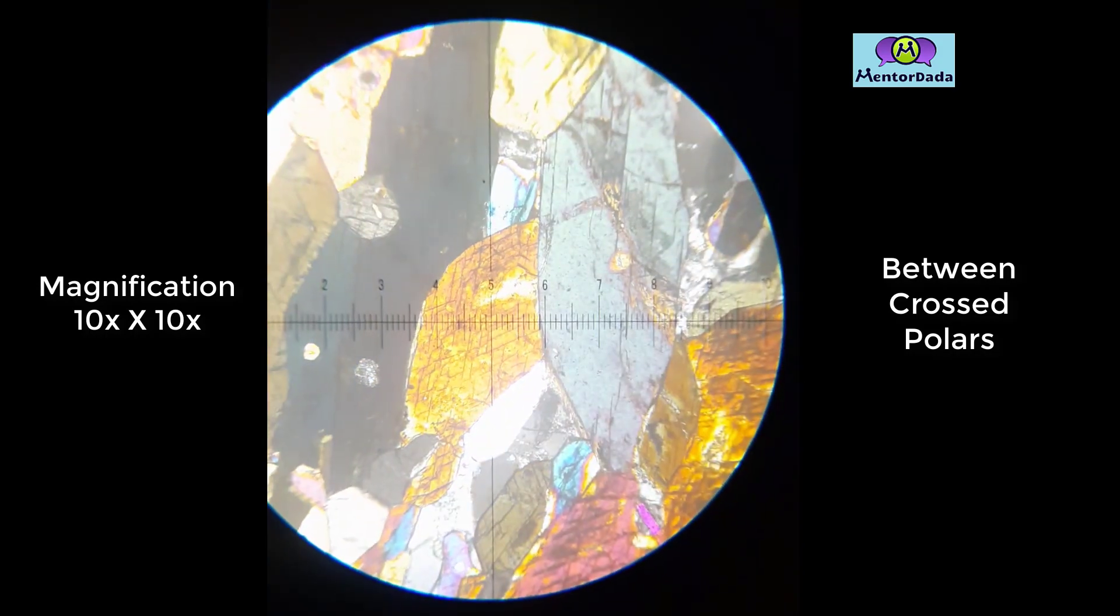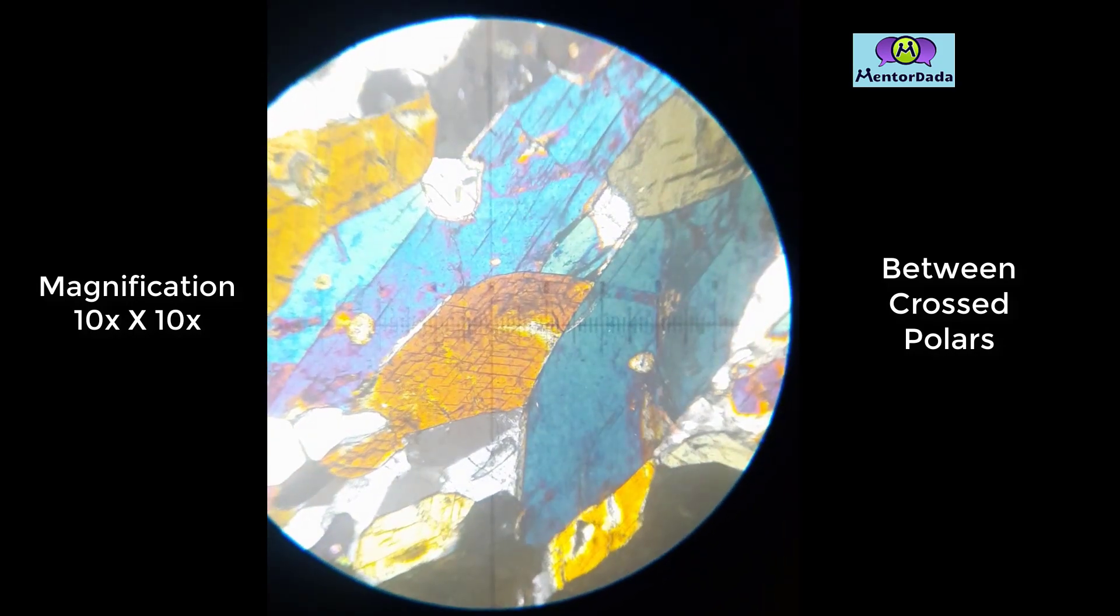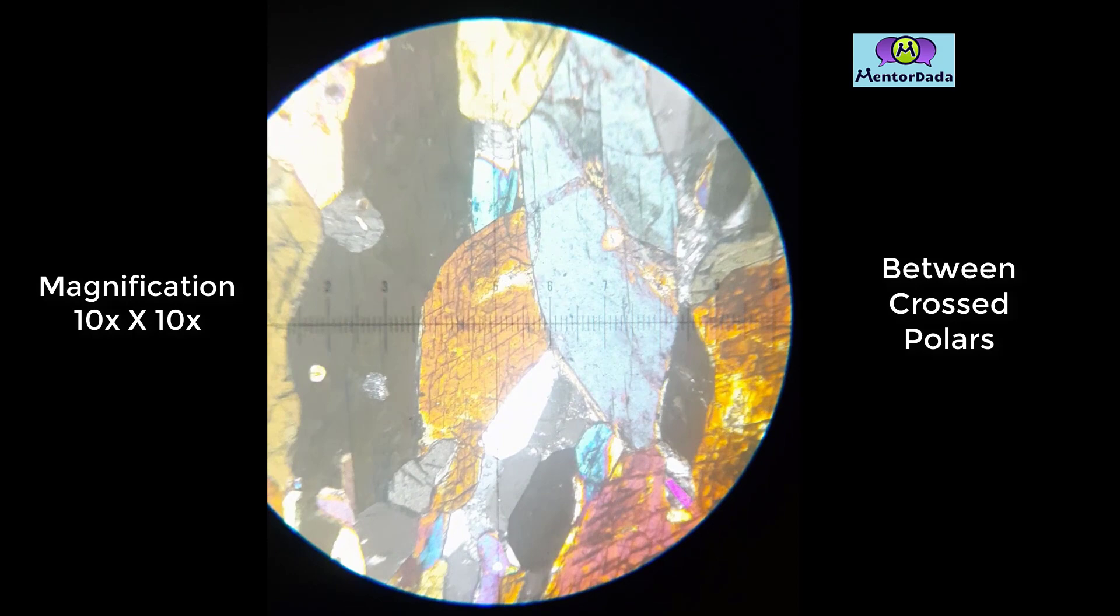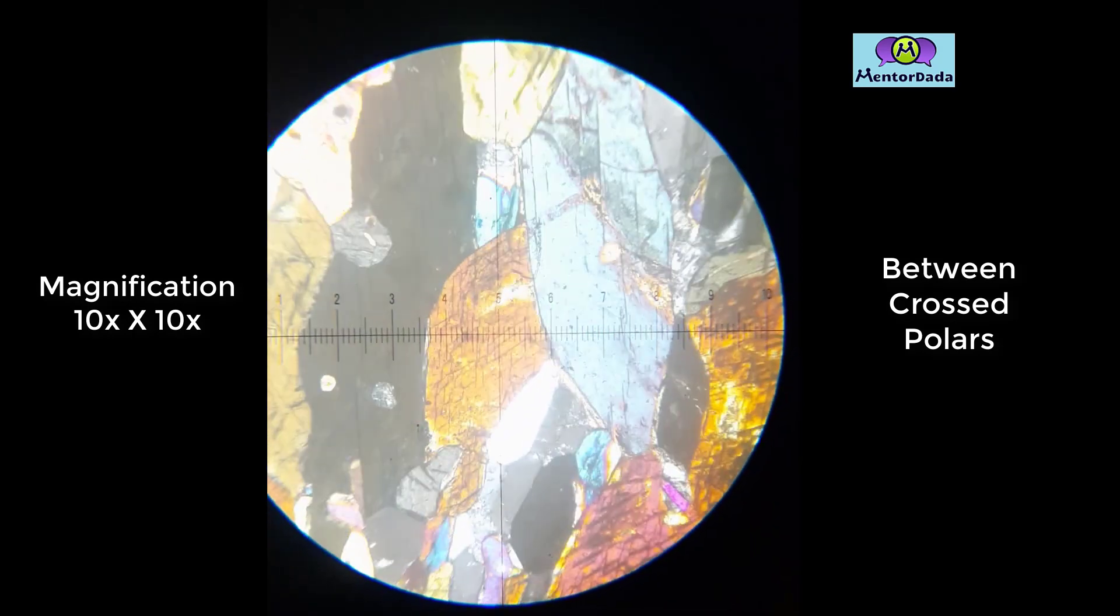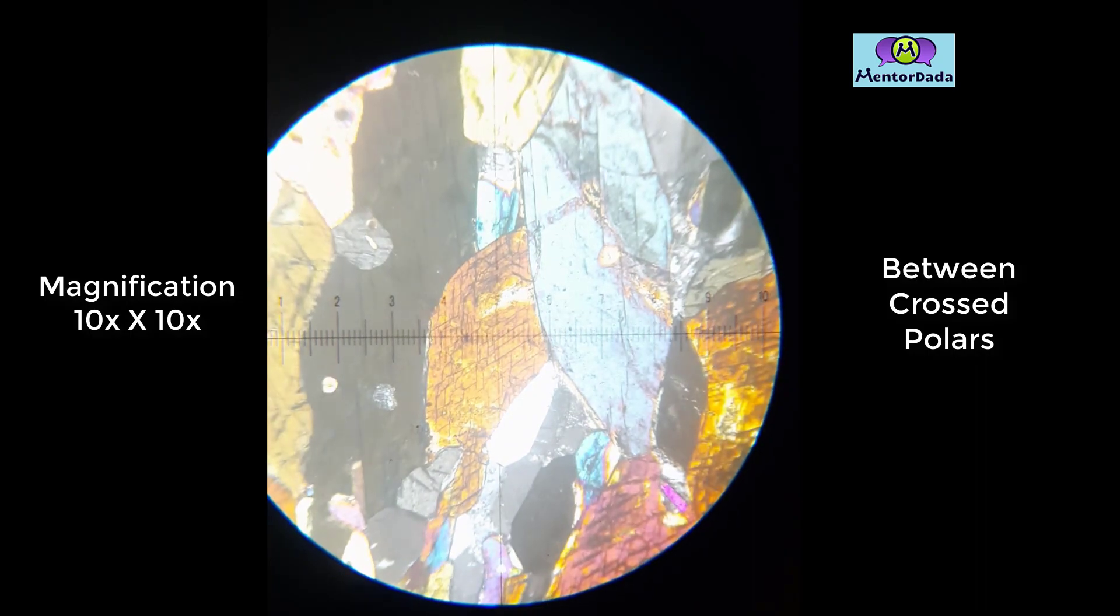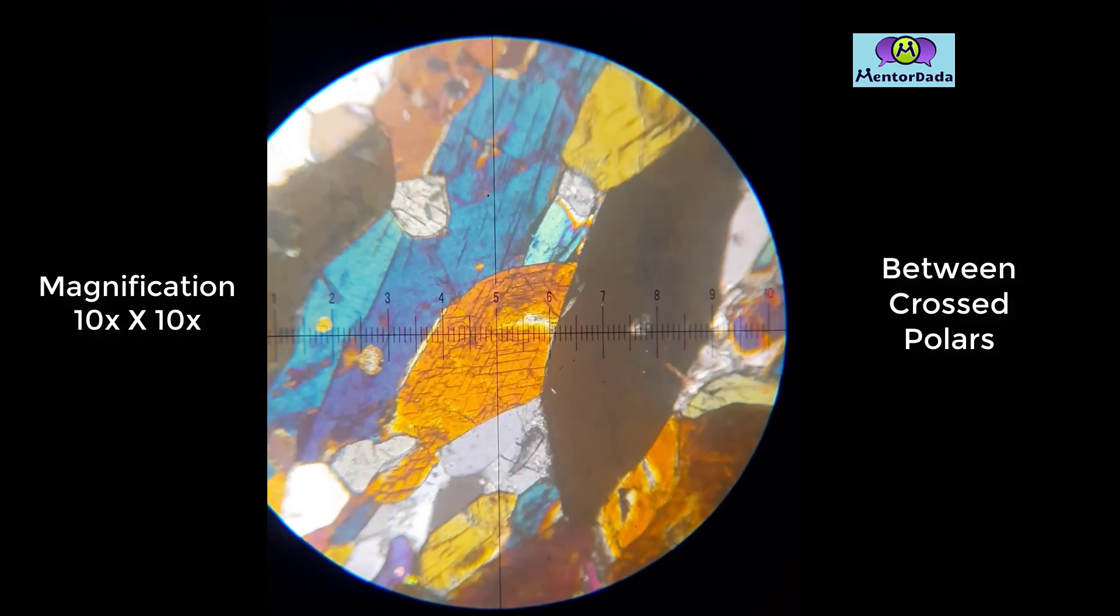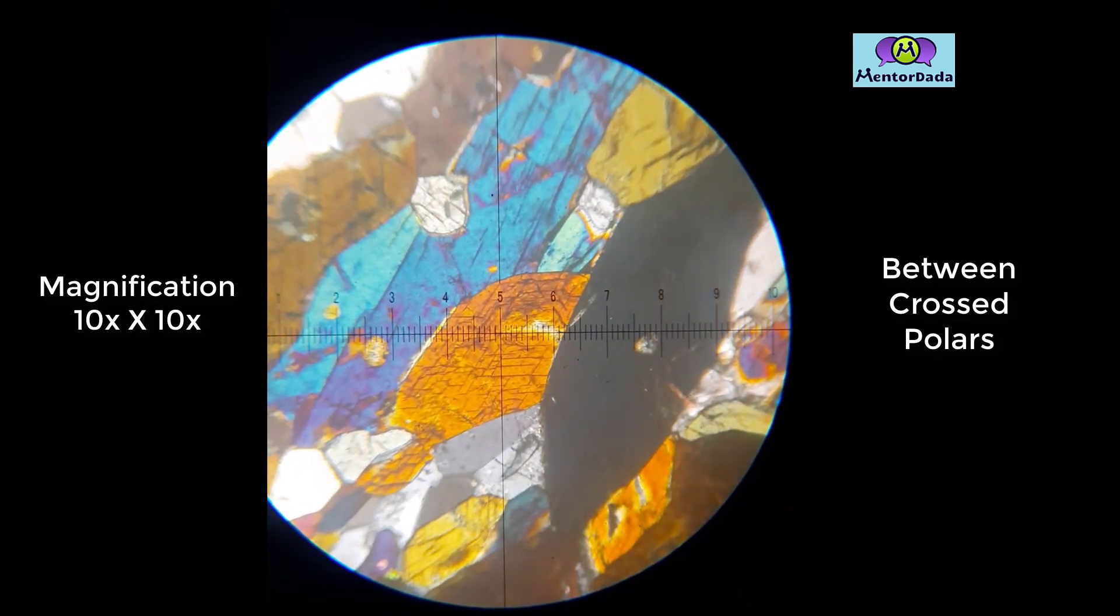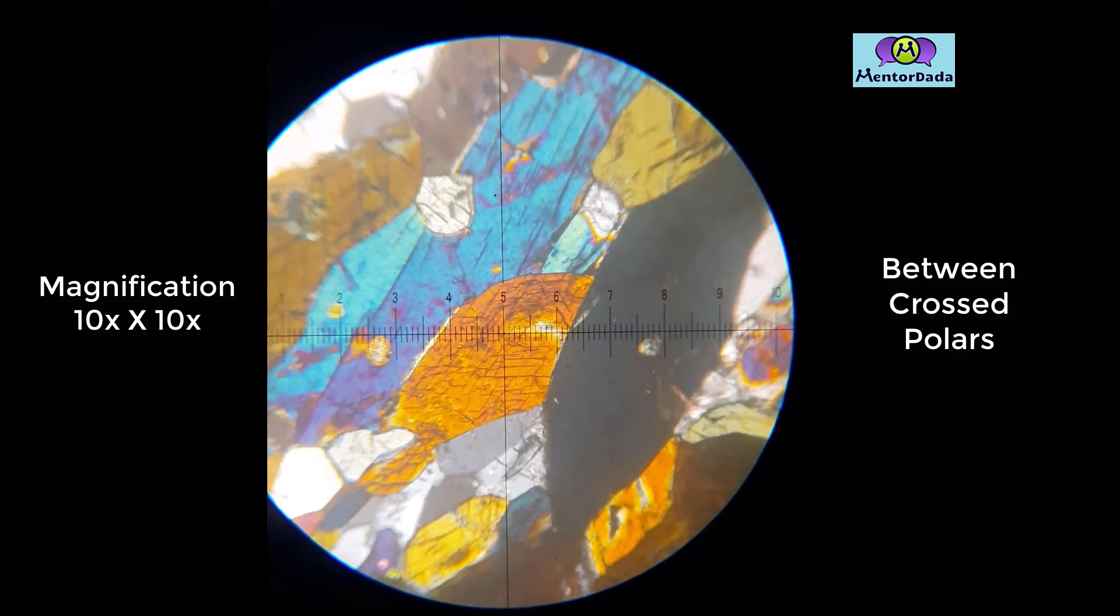As the stage is rotated, the mineral is changing its color between cross polars, so the mineral is anisotropic. At this position, one set of cleavage is parallel to the polarizer direction of the microscope and the mineral is not in its extinct position, so the mineral is not showing straight extinction.